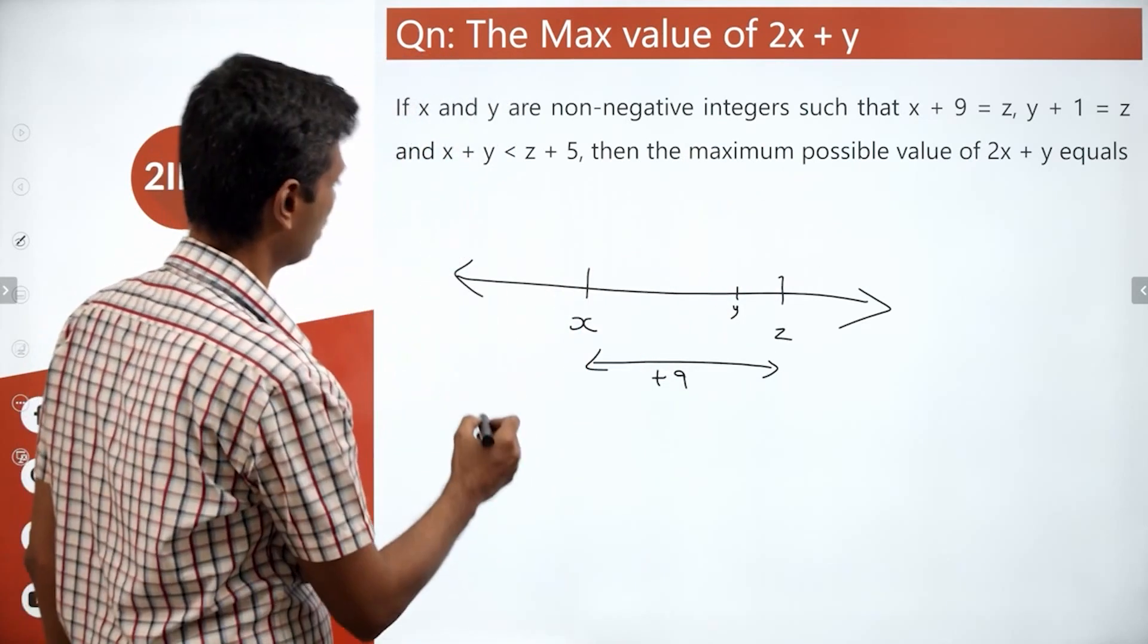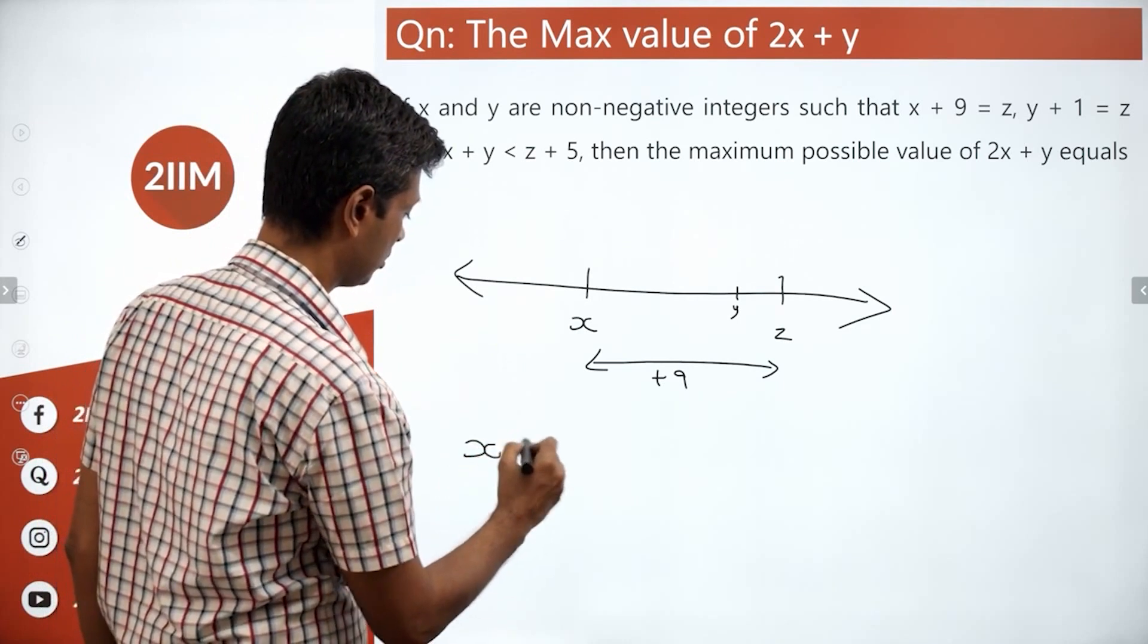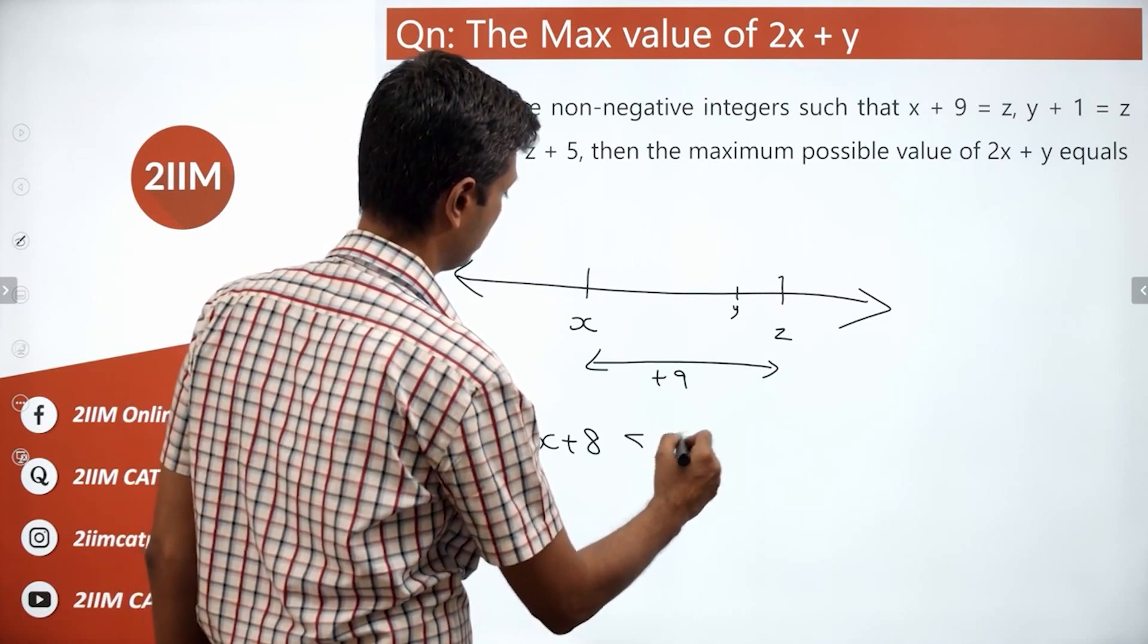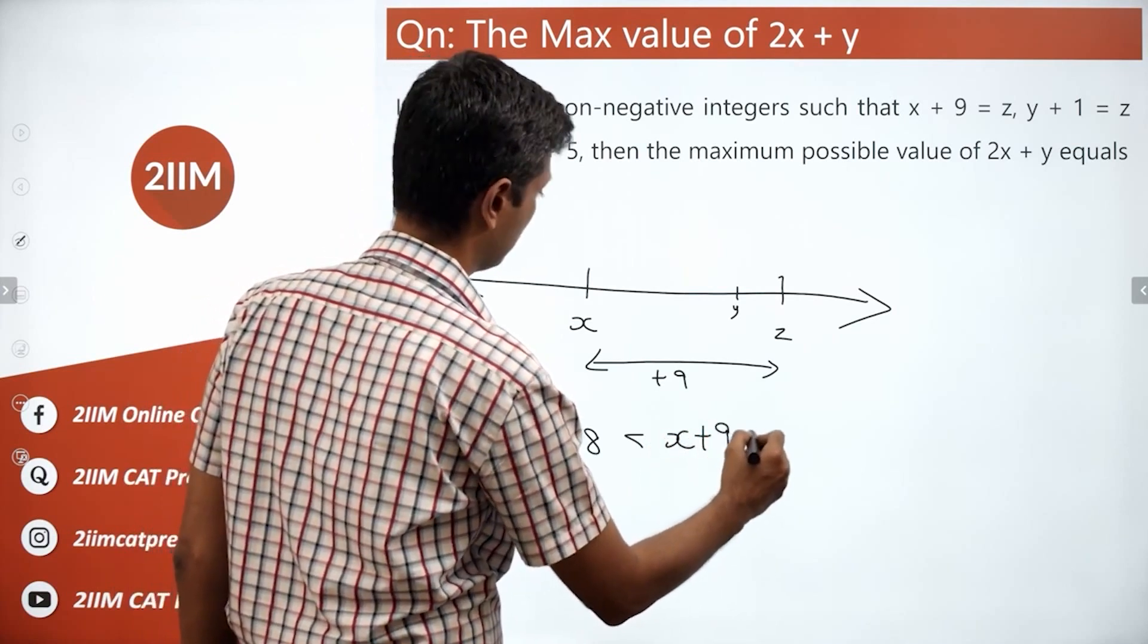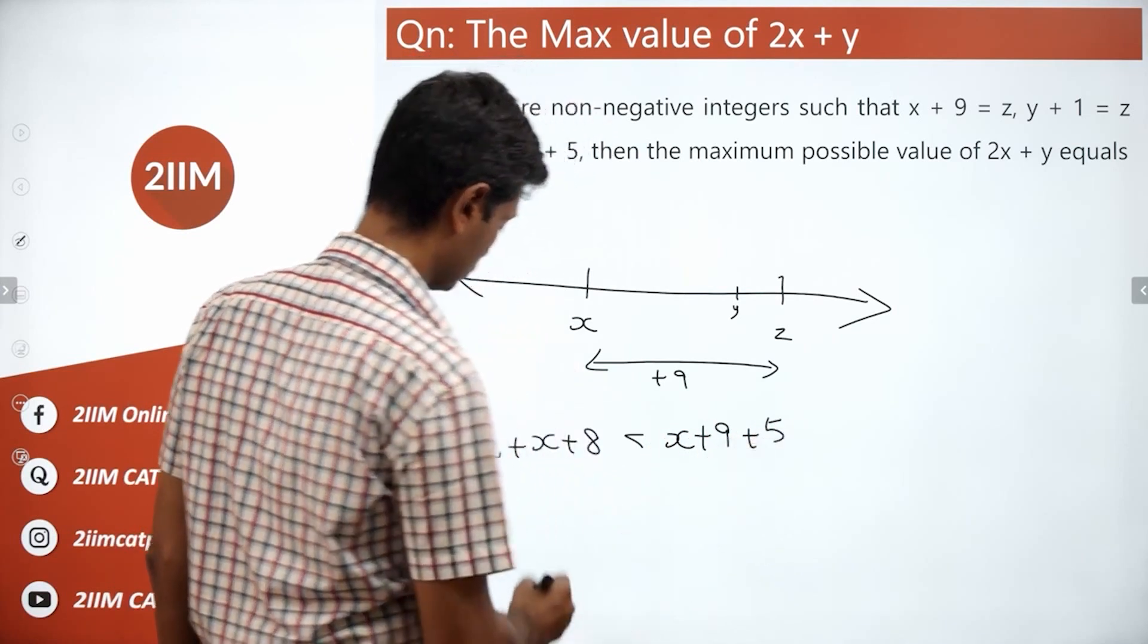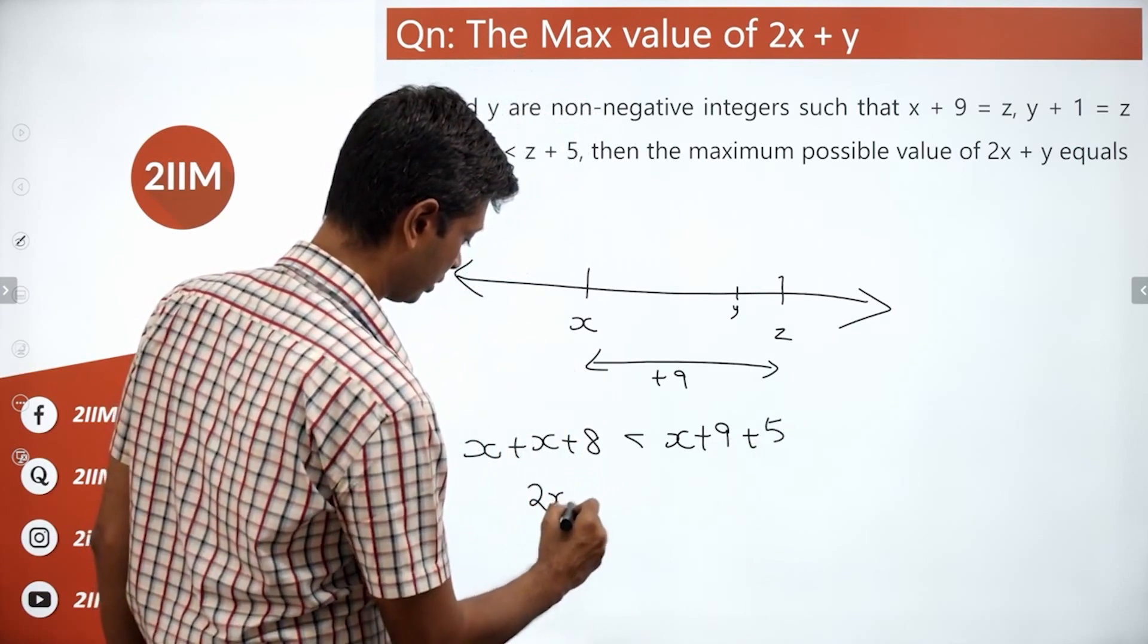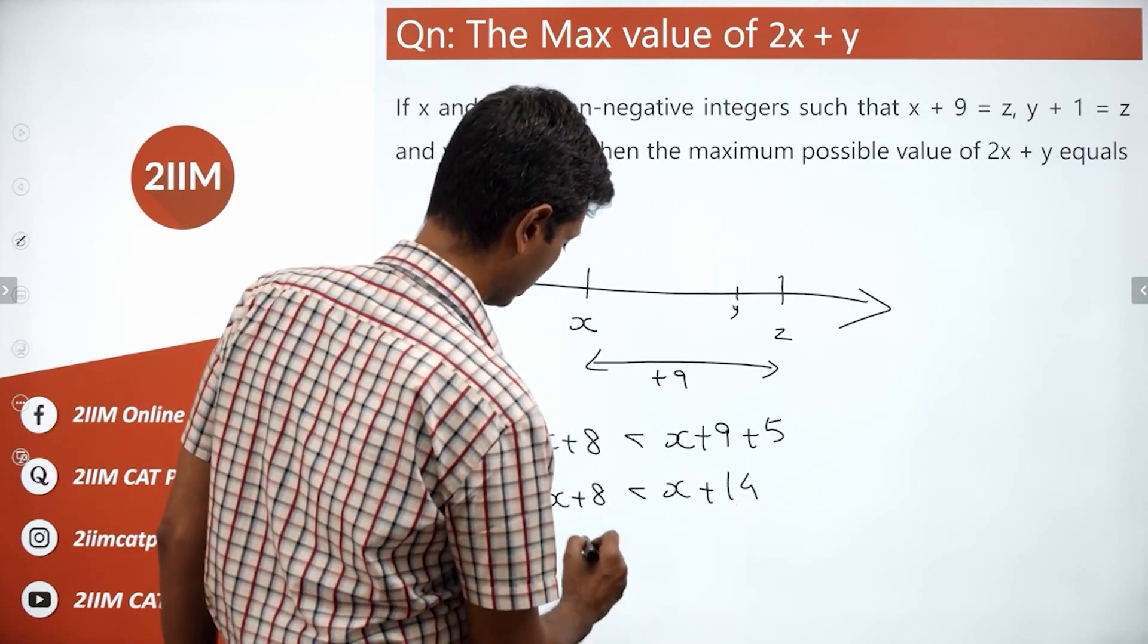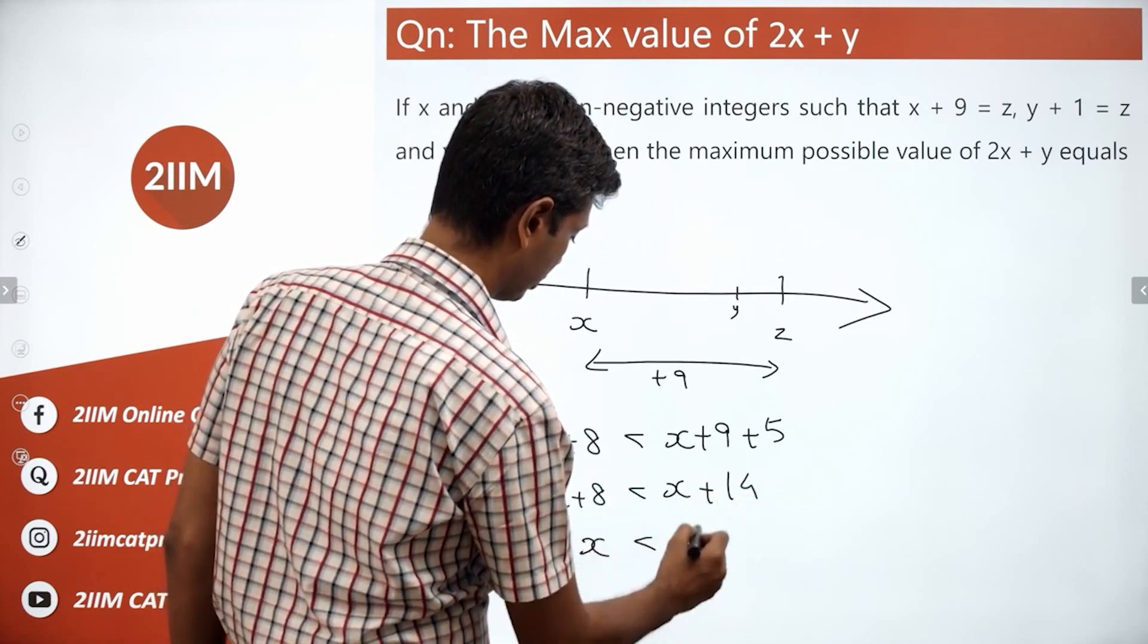So we have x plus y, which is x plus x plus 8 less than x plus 9 plus 5, or 2x plus 8 is less than x plus 14, or x is less than 6.